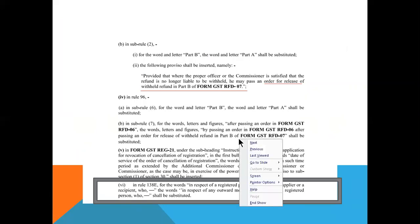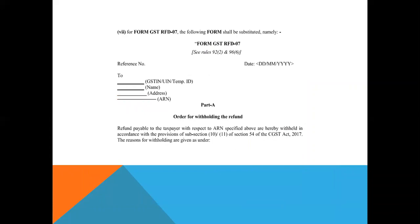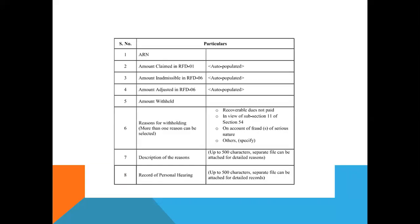You can see Form RFD-07 here. A drastic change can be seen in this form — the form displayed on your screen is the new one substituted for the earlier one. There is a mention of amount claimed, amount inadmissible, amount adjusted, or amount withheld. Also, there is a mention of the reasons for withholding of the refund, which will be specified in the order passed in Form GST RFD-07 as per this notification.